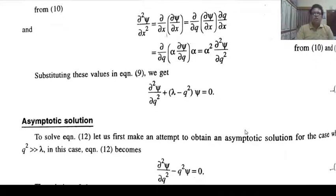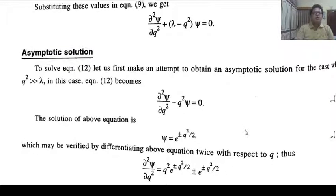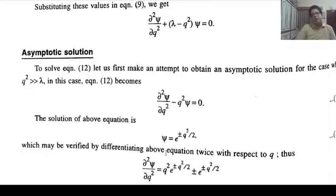This is a simpler form. To solve it, we first obtain an asymptotic solution. For the case when q² >> lambda, the lambda term is negligible, and the equation reduces to one containing only the q² term. The solution in this case is ψ = e^(±q²/2).